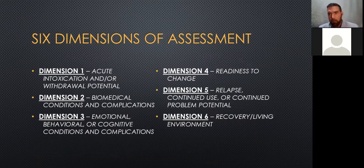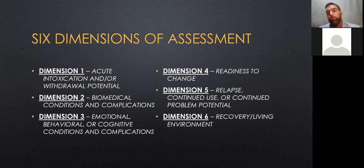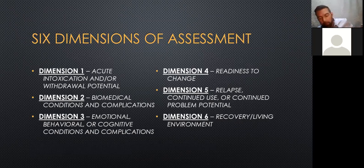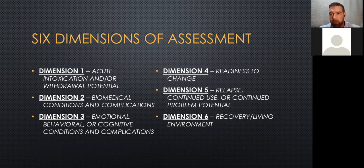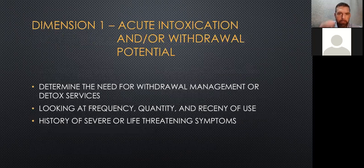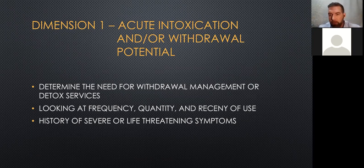Now that we've identified what those levels of care are — how does an addiction professional determine the most appropriate level? It's multidimensional — six separate ASAM dimensions exist. Dimension one is acute intoxication or withdrawal potential. This looks at how much a person uses, when was the last time they used, and how often. Is this someone who drinks three beers seven days a week, or someone using IV heroin daily for the last 18 months? This determines the need for detox or withdrawal management.